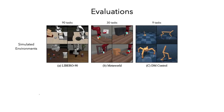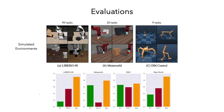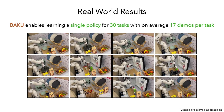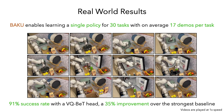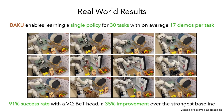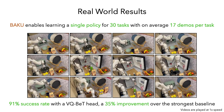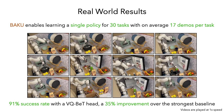We evaluate Baku on 129 tasks across three simulated environment suites: Libero, MetaWorld, and DMControl. We observe that Baku outperforms RT1 and MTACT by a significant margin on all these benchmarks. We also evaluate Baku on 30 tasks in a real-world multi-task kitchen environment, where a single Baku policy achieves a 91% success rate, outperforming the strongest baseline by 35%.